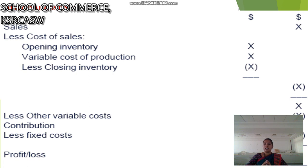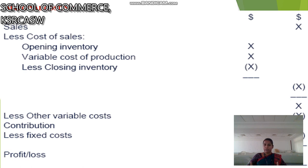Next is the marginal cost statement. Sales minus cost of sales equals gross contribution. Cost of sales means opening inventory plus variable cost of production less closing inventory. After that, we deduct other variable costs to arrive at contribution, then less fixed cost to get the final answer of profit or loss.